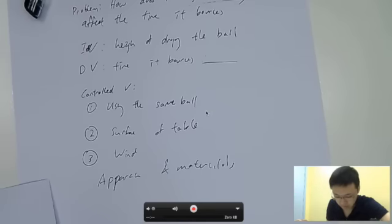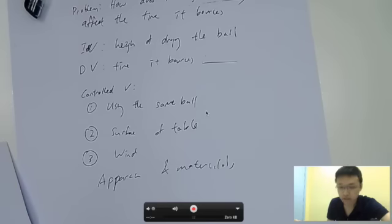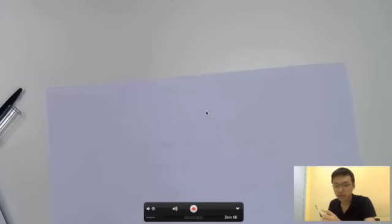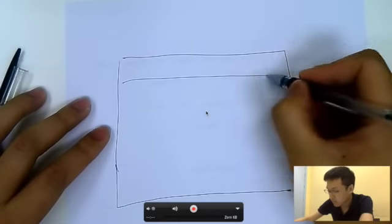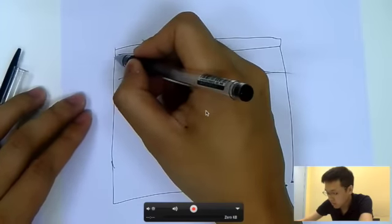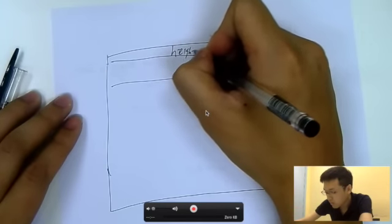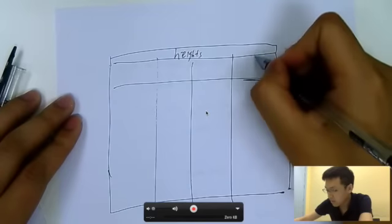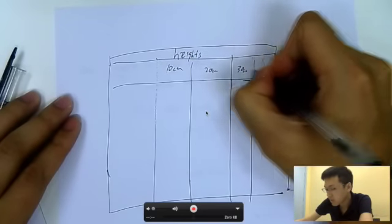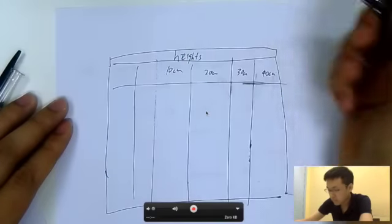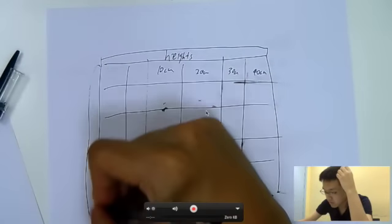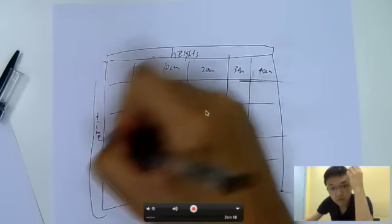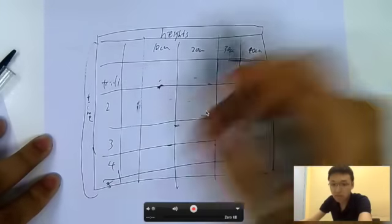Now let's move to the data collection. You need a table with heights — 10 cm, 20 cm, 30 cm, 40 cm — on one axis, and time across the top with columns for trial one, trial two, trial three, trial four, and trial five. For the height column, it's very important to state the uncertainty. If you're measuring with a ruler in millimeter increments, the uncertainty is half the smallest increment — so plus or minus 0.05 cm.